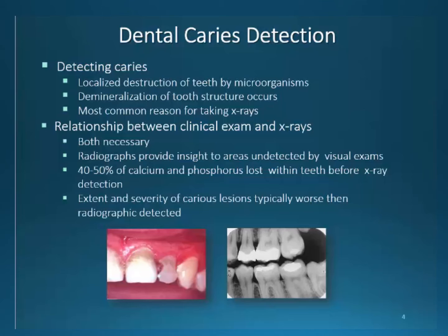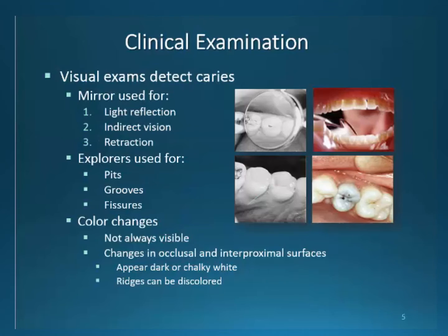It is known that the severity of identified decay is always worse than radiographic appearances. This must be remembered when informing a patient of the conditions and need for restoration. The clinical exam requires the use of a mirror for light reflection, indirect vision, and retraction. The explorer is used to identify pits, grooves, and fissures. You may have learned to detect decay in these areas by adapting the light force that encourages a stick. Be mindful — it is not necessary to do this if visible decay is obvious.